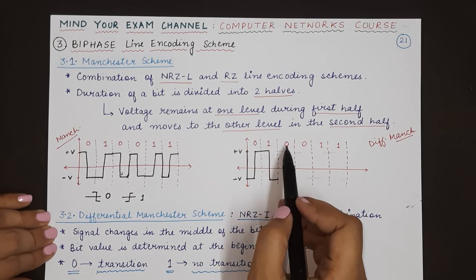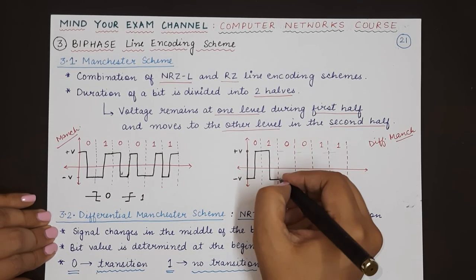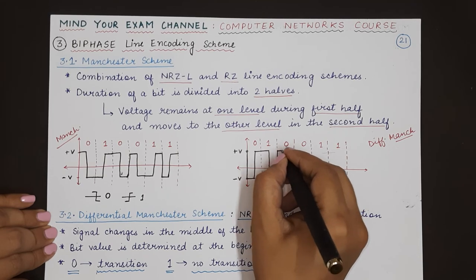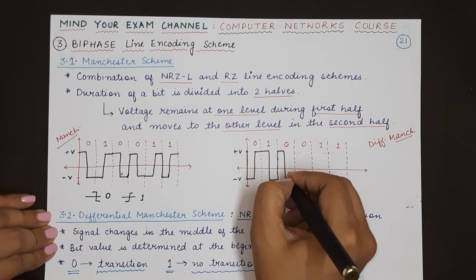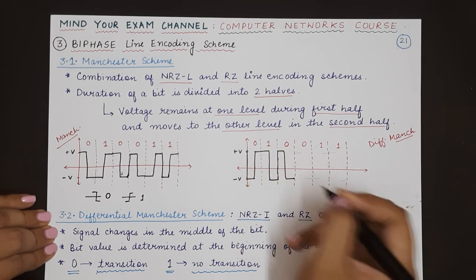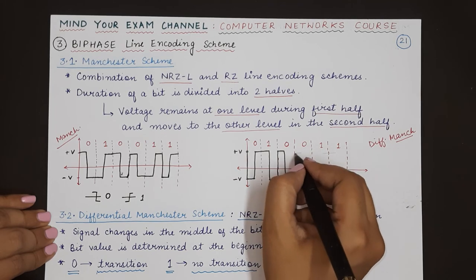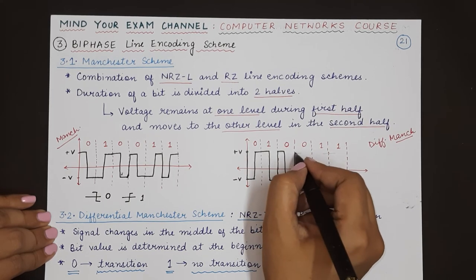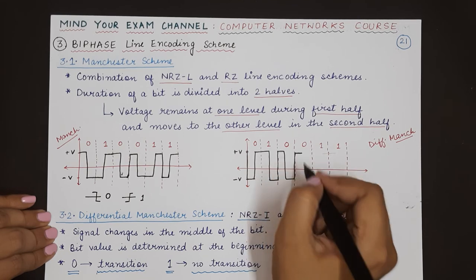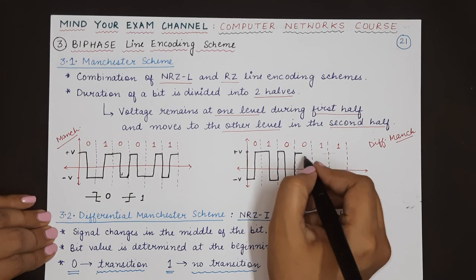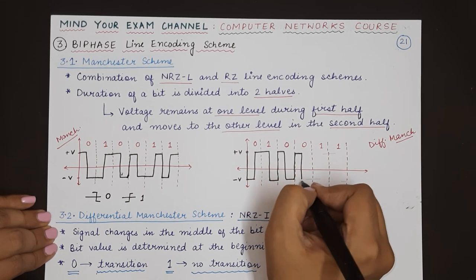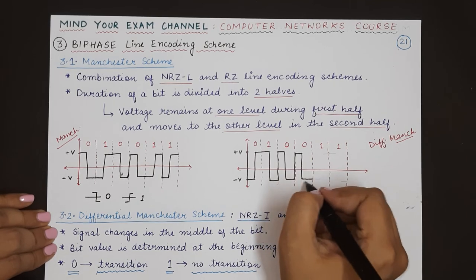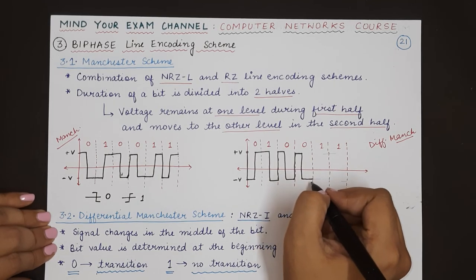The next is 0, which means we change the voltage level — from negative to positive, then change again at the middle. The next 0 again means transition: current is negative, so we change from negative to positive, come back at the middle, then remain there until the end of the zero bit.